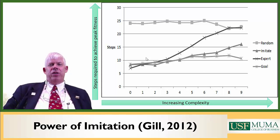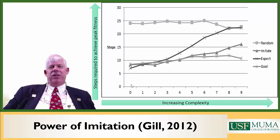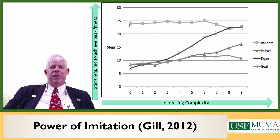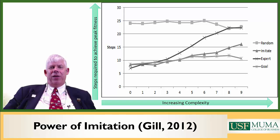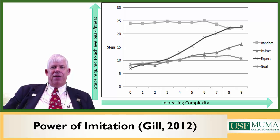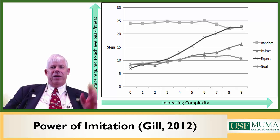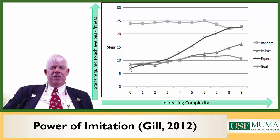Starting with zero complexity, we get very similar results for all three non-random choices — the random entity never does that well. The expert entity did just a little better because it could take all information in the environment. With zero complexity and complete decomposability, if something works in one place, it will work in another — so if attribute three gives a positive increase to fitness, it always will. So it's pretty easy to find fitness at zero complexity.